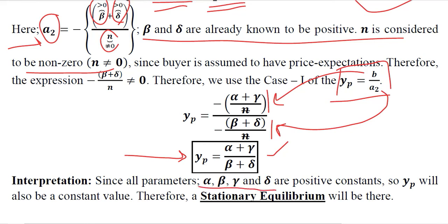α, β, δ, and γ are all positive constants, as we were told in the beginning of this model. So yₚ will also be a constant value, and it will be a positive value because all of them are positive and being added with no subtraction happening.